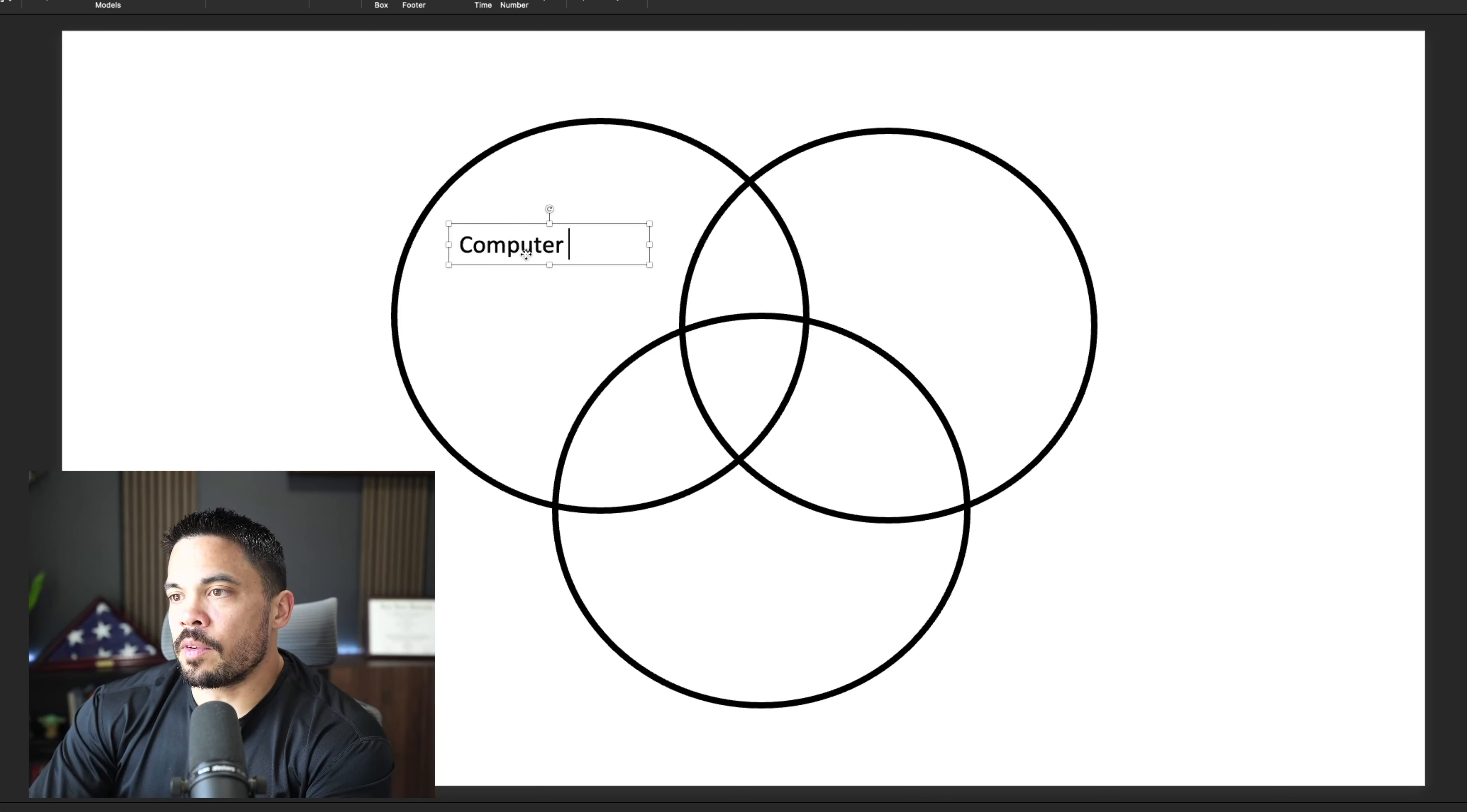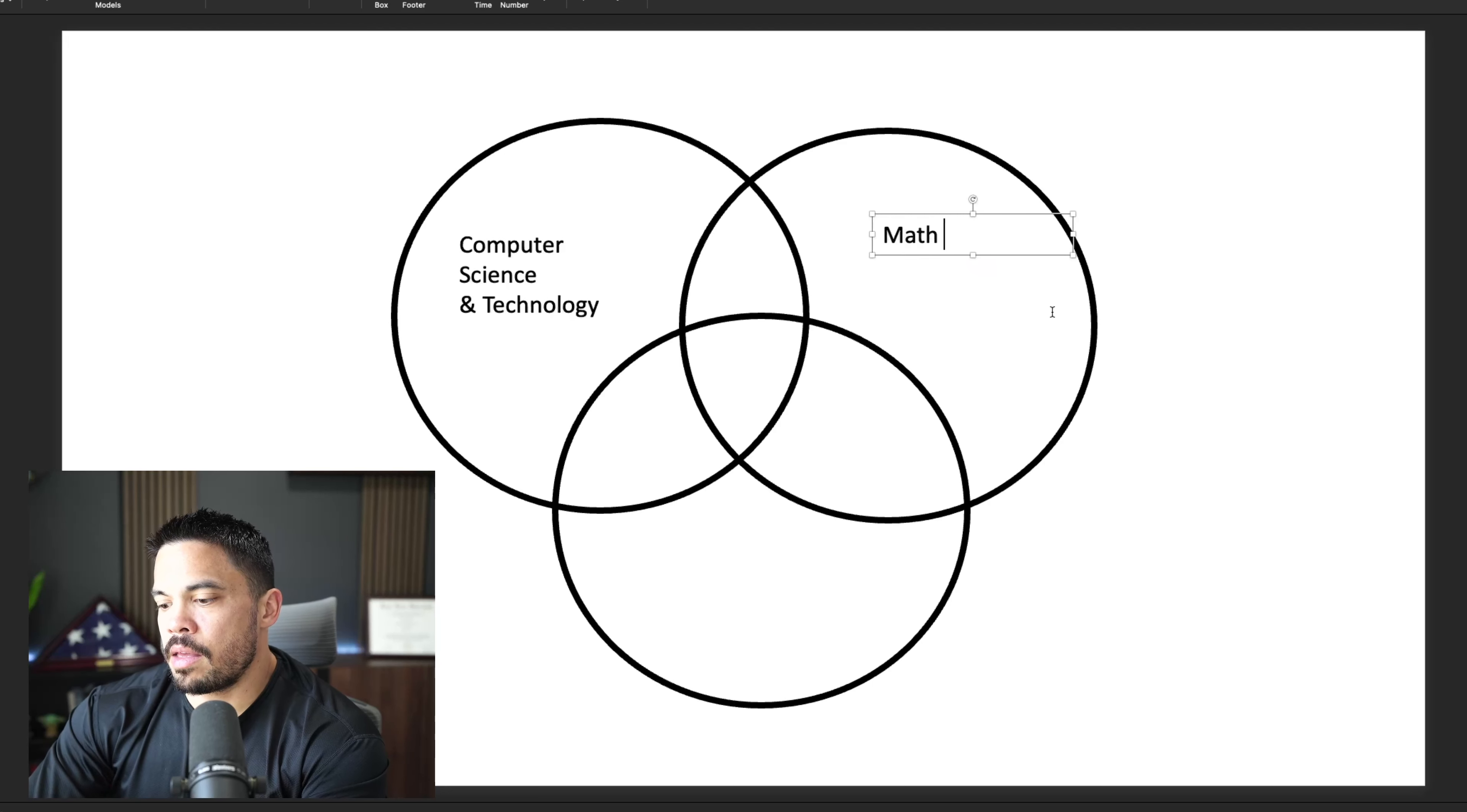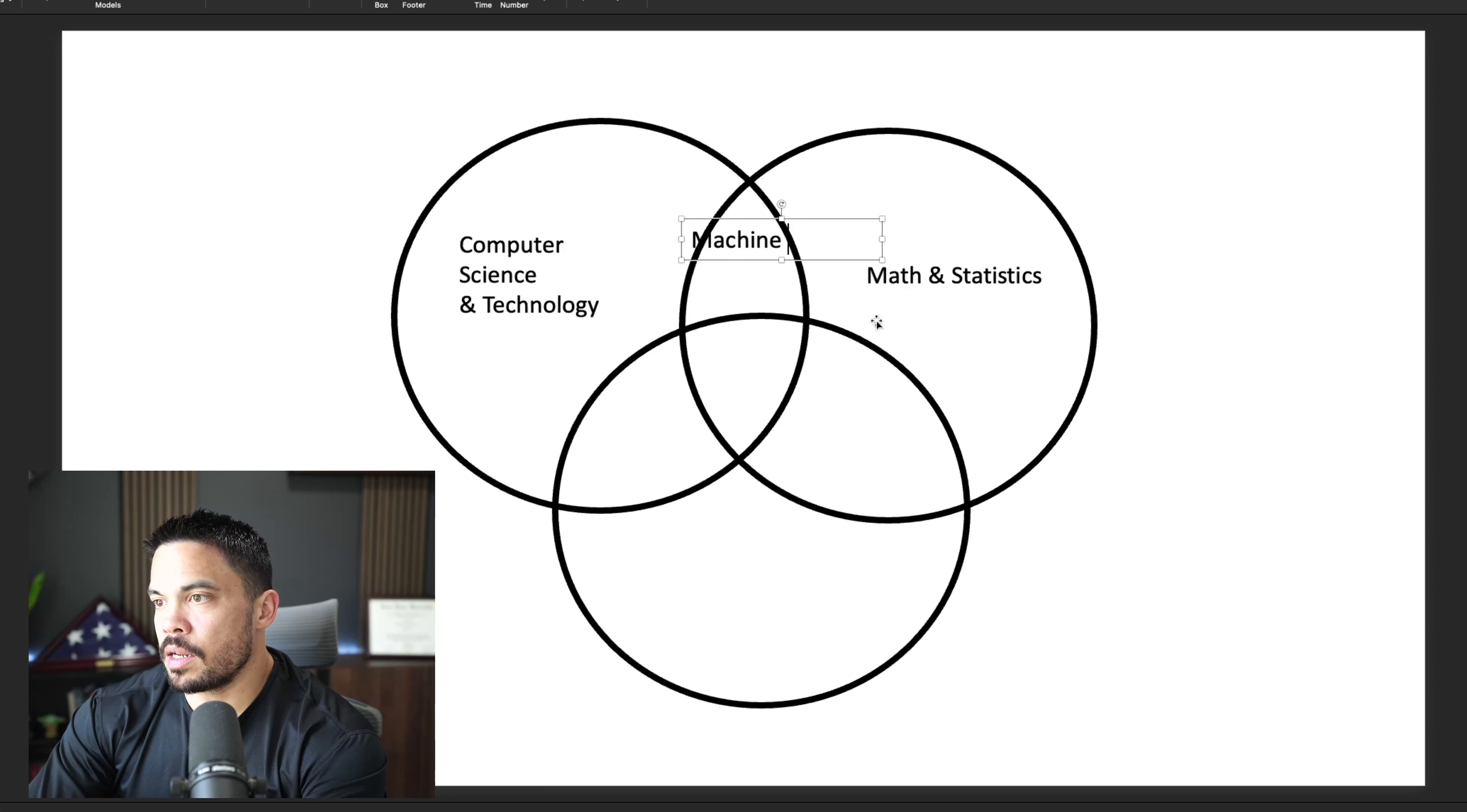So in this bubble here, we have computer science and technology. And then over here we have math and statistics, and this is everything that's making up all the different parts of artificial intelligence, because right here, as we overlap here, we're going to see machine learning and deep learning.